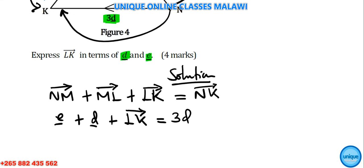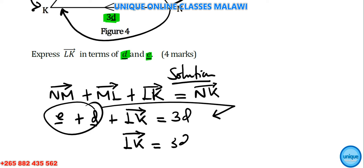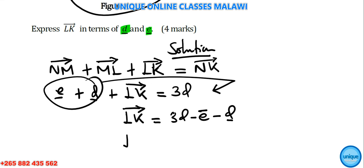To make LK the subject of the formula, we are going to move these two to this side. So we have e plus d plus LK = 3d. Combining items together...